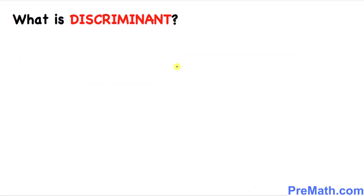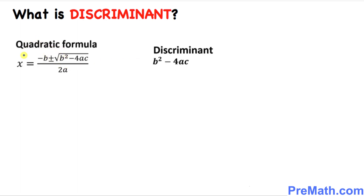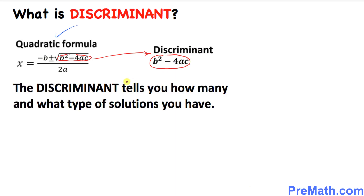The first question is: what is the discriminant? As we know, this is our quadratic formula. The part inside the radical symbol is called our discriminant. From this point on, our discriminant is going to be b squared minus 4 times ac.